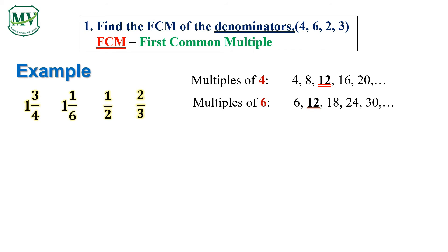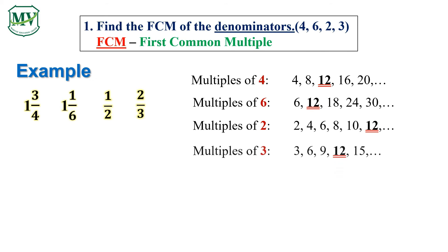The multiples of 2 are: 2, 4, 6, 8, 10, 12, and so on. The multiples of 3 are: 3, 6, 9, 12, 15, and so on.